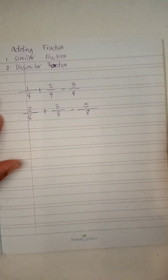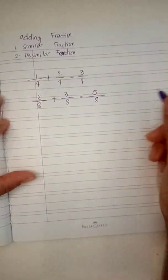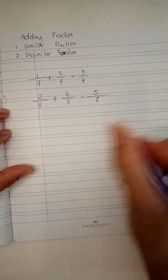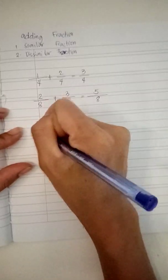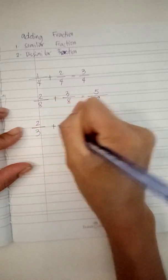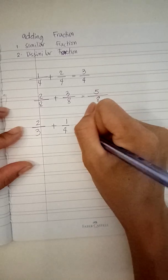Now, let's proceed to dissimilar fraction. The example of dissimilar fraction is like two-thirds plus one-fourth. In this case...